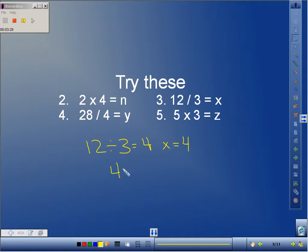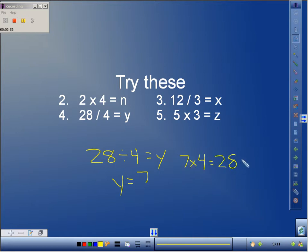Let's look at number 4. For number 4 we have 28 divided by 4 equals y. 28 divided by 4 equals y, y will be equal to 7, and our inverse operation will be 7 times 4 is equal to 28.